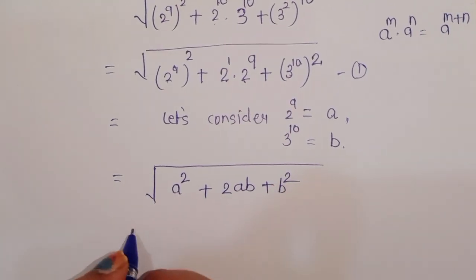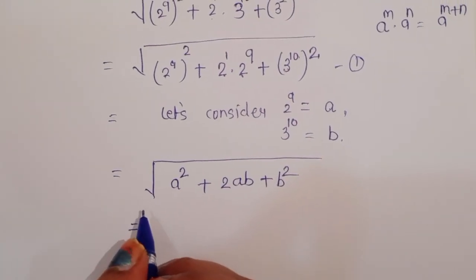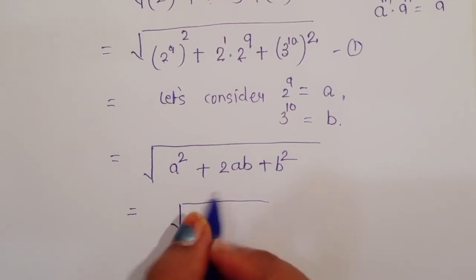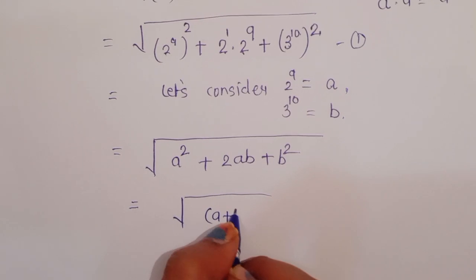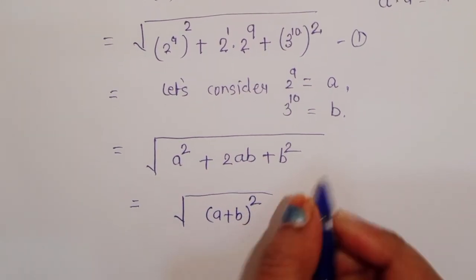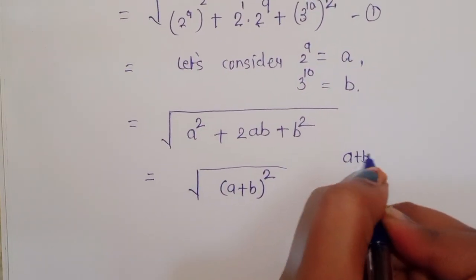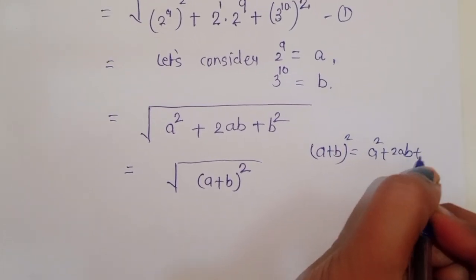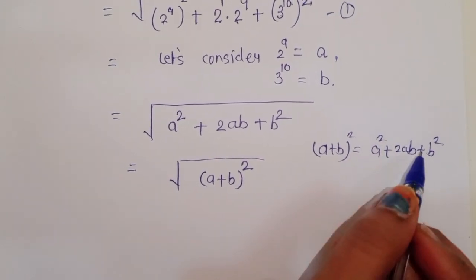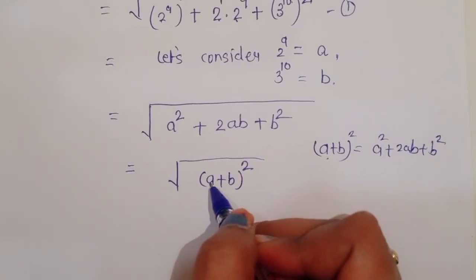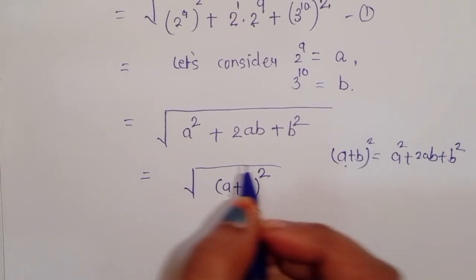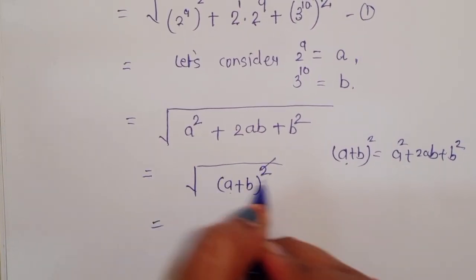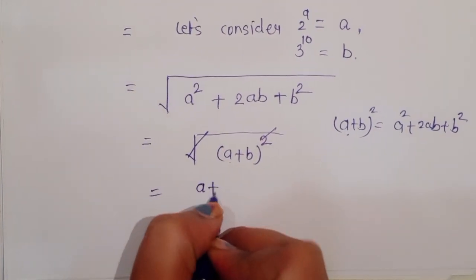So we can write a squared plus 2ab plus b squared, which is the formula for a plus b whole square. We know that a plus b whole square equals a squared plus 2ab plus b squared. Using this formula, we write a plus b whole square inside the square root, and the square is cancelled by the square root, giving us a plus b.